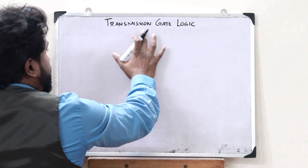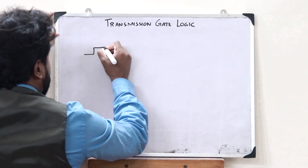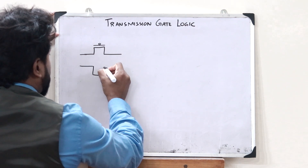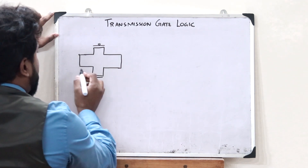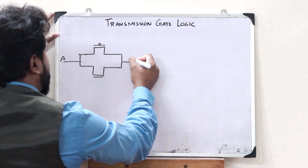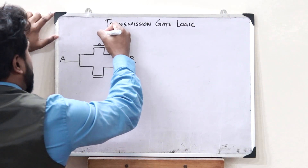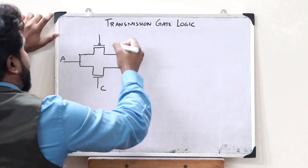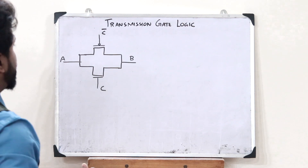In order to implement a transmission gate logic, first we would take a PMOS transistor like this, and then we would take an NMOS transistor like this, and connect them in parallel. Here we give a particular input A, and we obtain a particular output B. At the gate of both the PMOS and NMOS transistors, we give control signals — a signal C and its complement C̄.